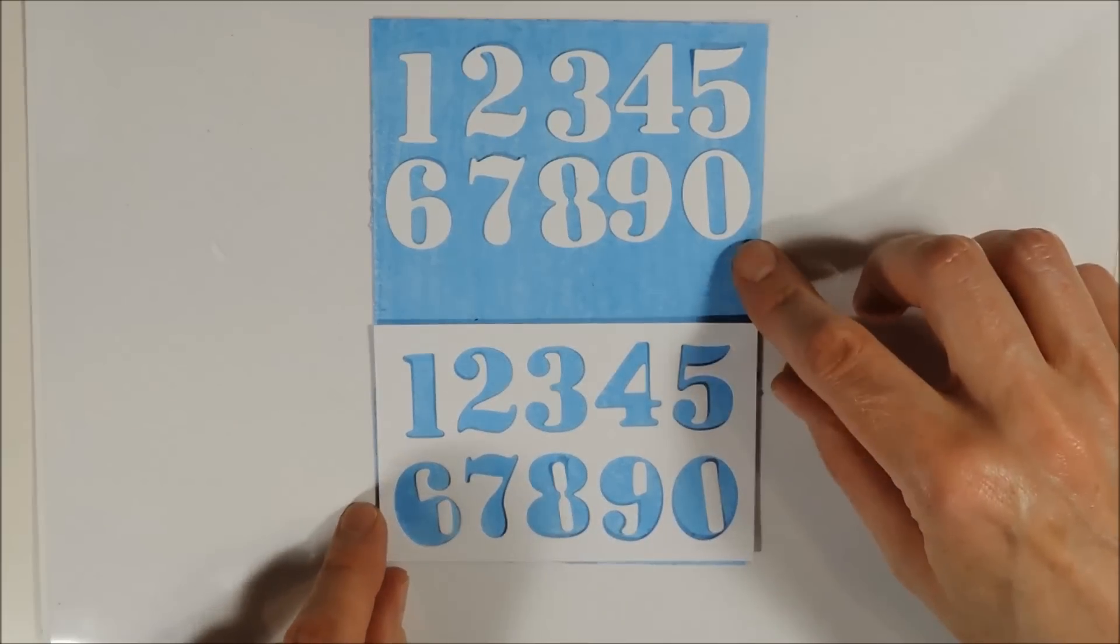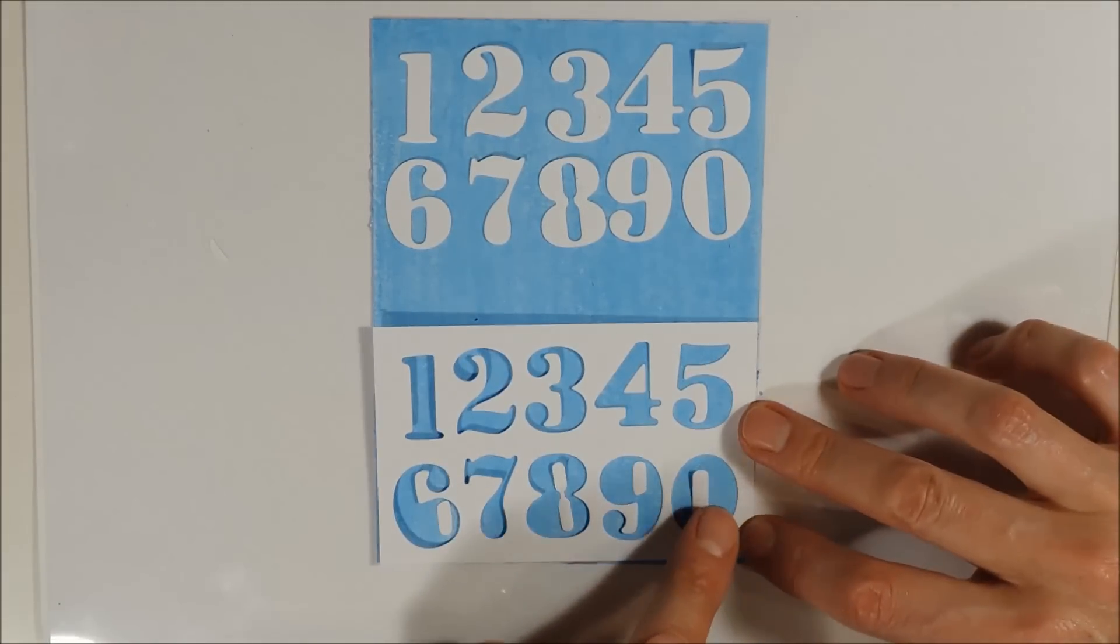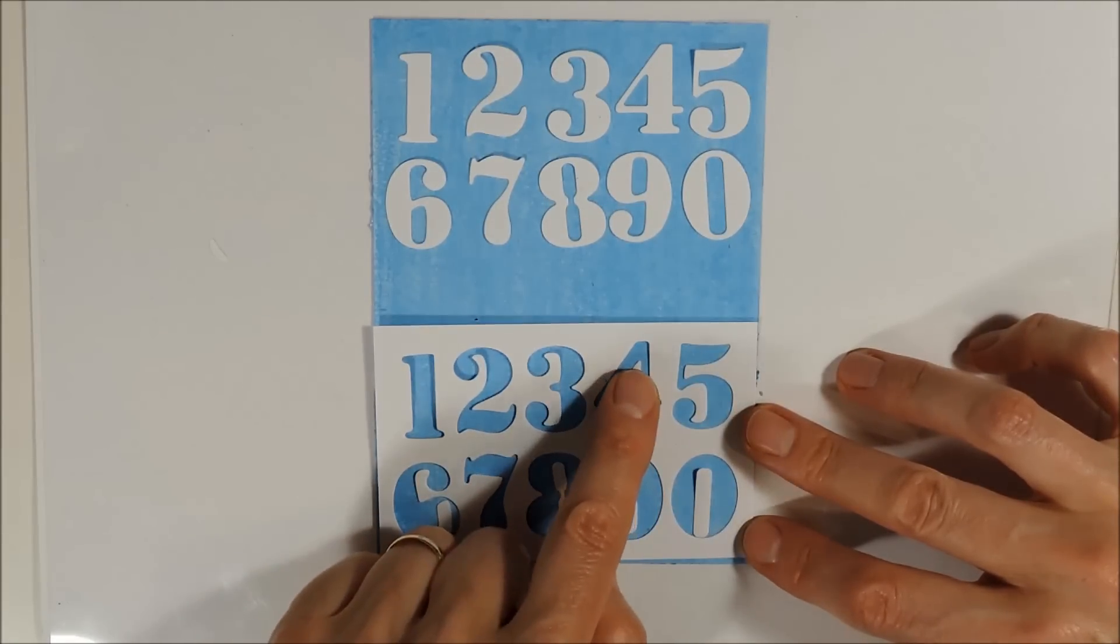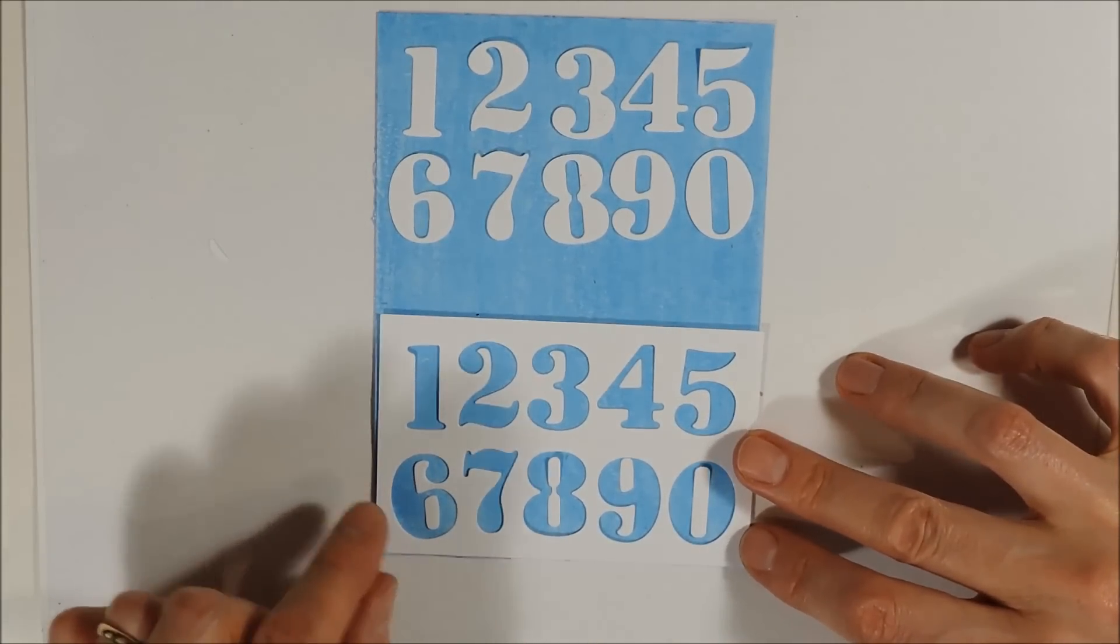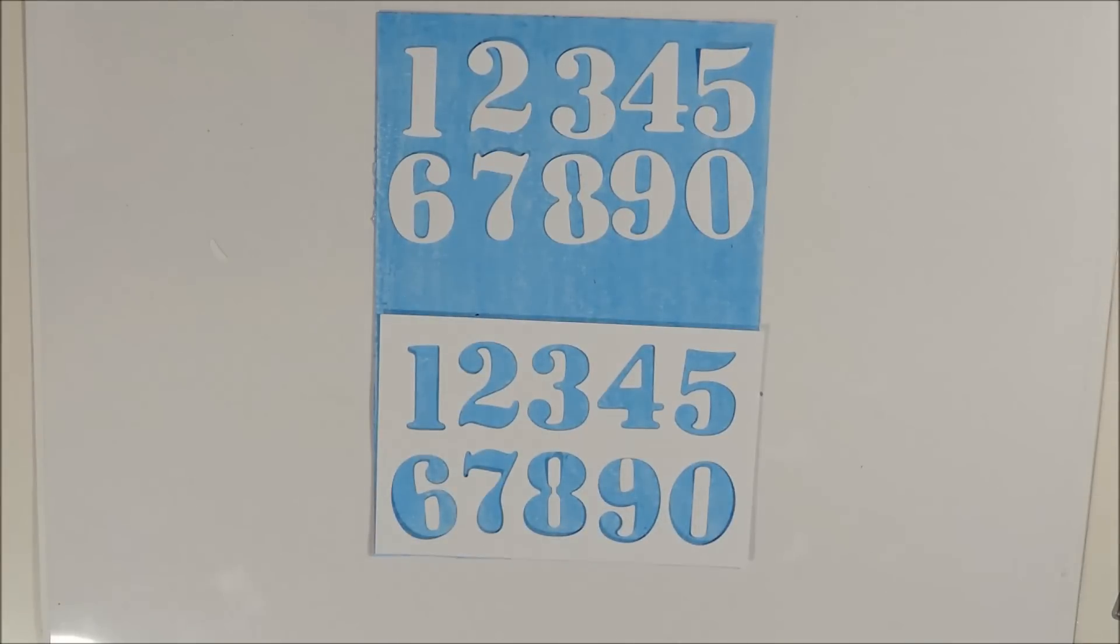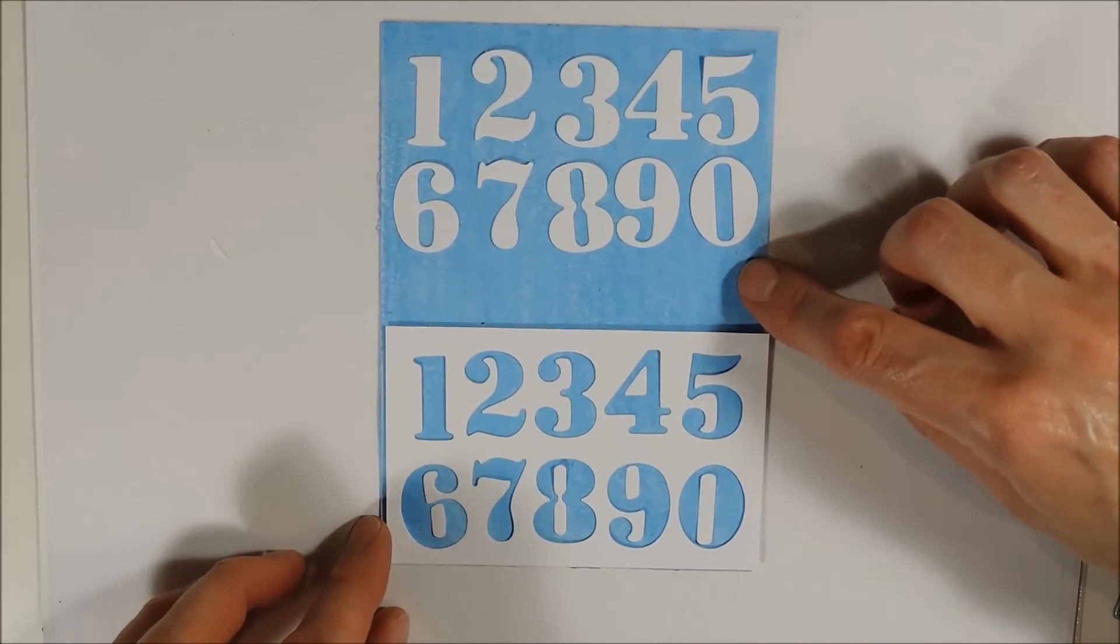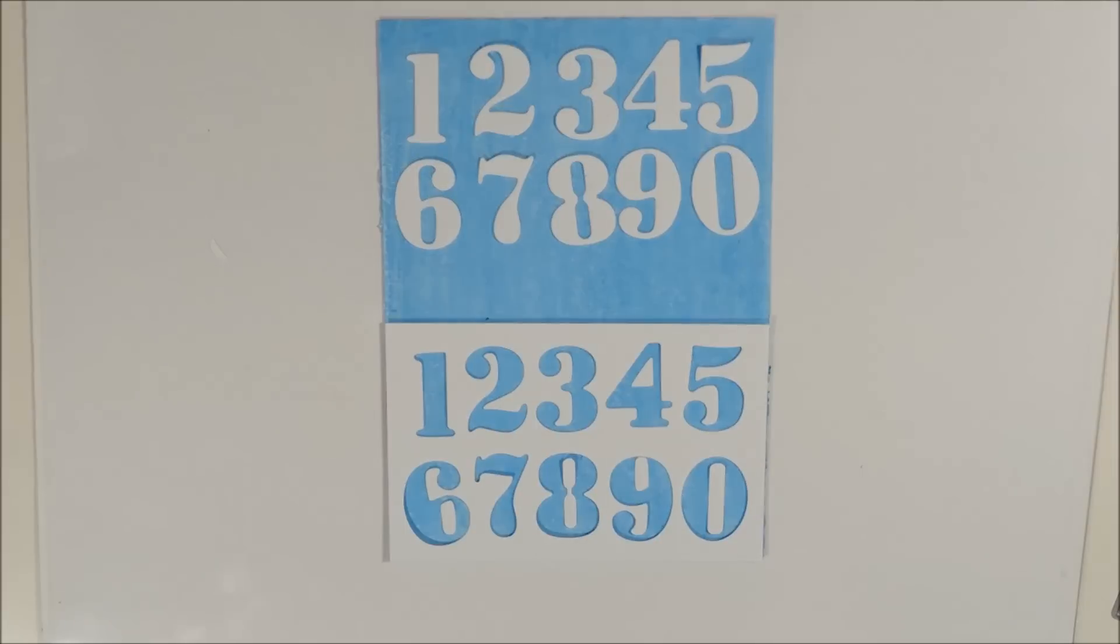So you get an idea how your die cuts look on your card. And here you can see the negative die cut and as you can see the little tiny pieces are not so tiny so that you can replace them in your negative die cut.